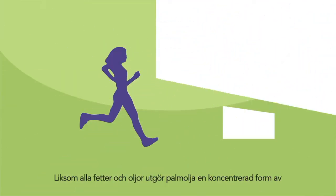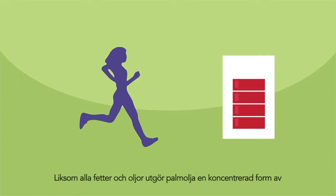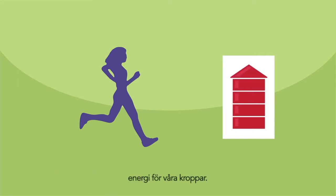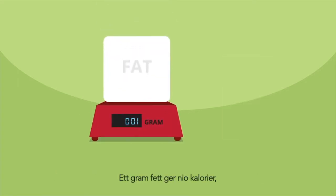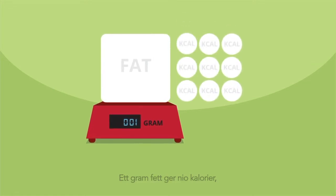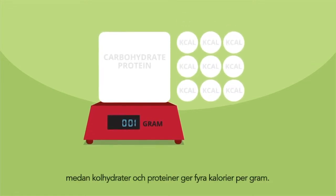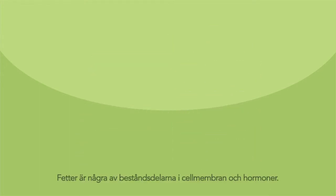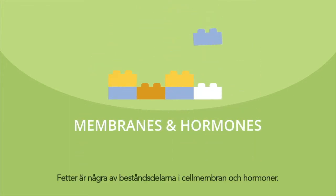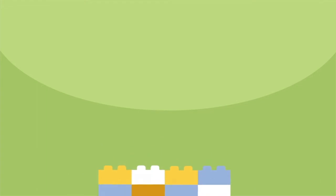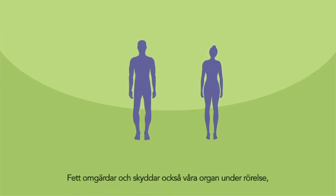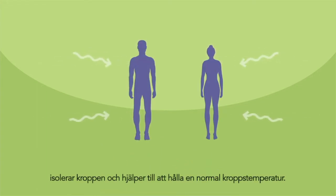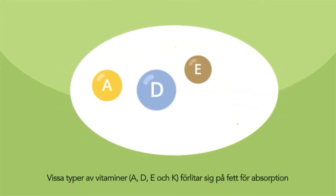Like all fats and oils, palm oil is a concentrated source of energy for our body. One gram of fat provides 9 calories, while carbohydrates and proteins provide 4 calories per gram. Fats are structural components of cell membranes and hormones. Fat also cushions our organs during movement, insulates the body and helps maintain a normal body temperature.